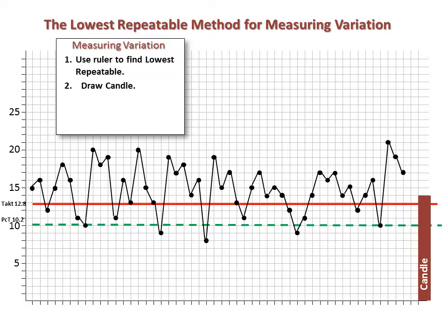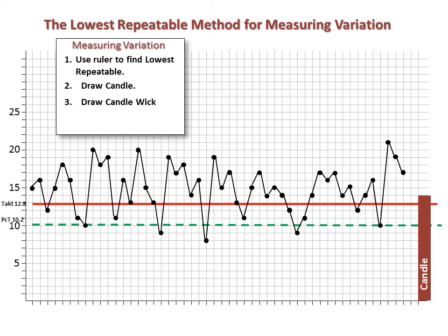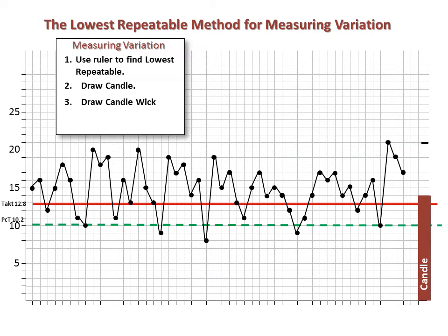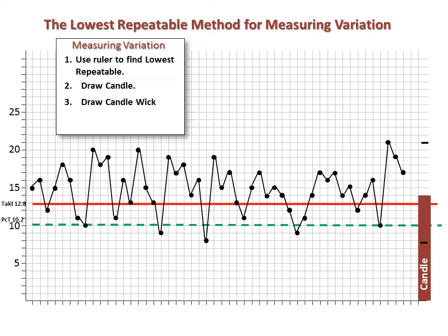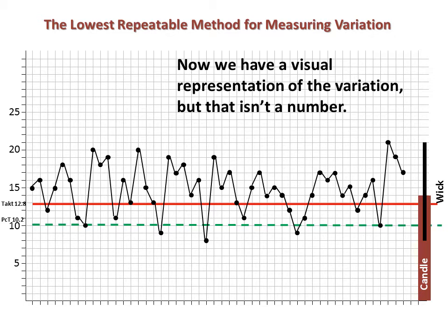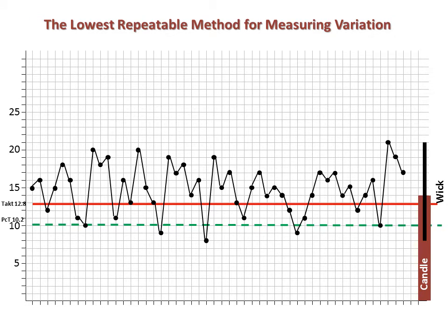Now we need to turn our attention to depicting the variation in the cycle times of the process in such a way that we can compare it to the lowest repeatable. We have a candle, and now we'll add a candlewick that will give us our comparison. To create the candlewick, find the highest data point on the graph and move directly to the right over the candle at that point, making a short mark at that level. This becomes the top of the candlewick. Next, do the same for the lowest data point on the graph — the level of the lowest point becomes the bottom of the candlewick. Connect both top and bottom lines with a vertical line. Thus, you have a candle and a candlewick that extends both above and below the lowest repeatable. Now we have a visual representation of the variation — this candlewick visually represents the range of positive and negative variation experienced with the process.